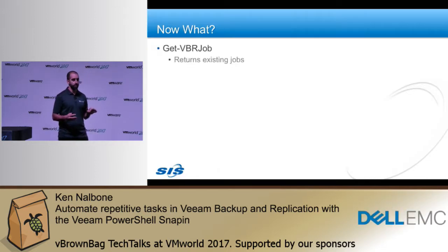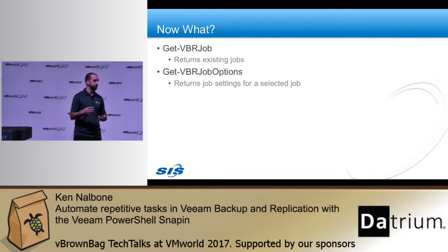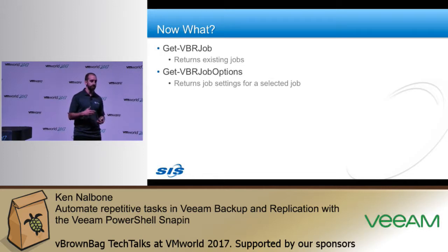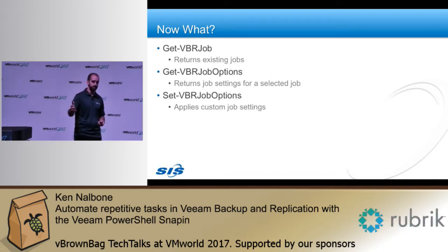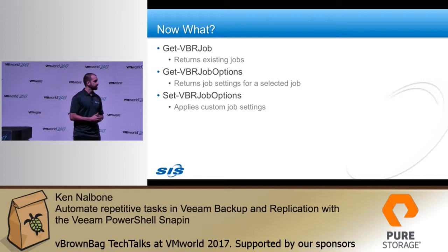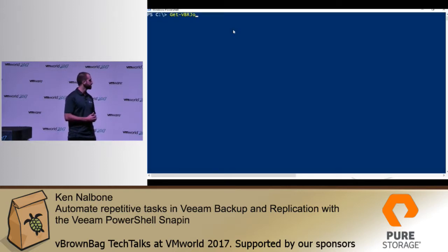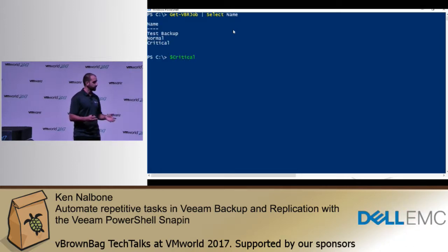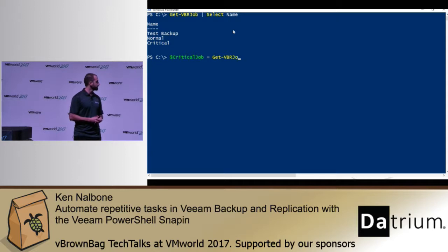I found three commands I thought would work for me that came with the snap-in. First: Get-VBRJob, which returns a list of jobs. Second: Get-VBRJobOptions, to check out the options inside a job — if I could find the correct option to change, I could do it without going into the GUI. Third: Set-VBRJobOptions, to actually return the modified options back into the job. I spent about an hour or two one day figuring this out. I decided to first see what jobs I had, then assigned the job named 'critical' to a variable named critical_job.